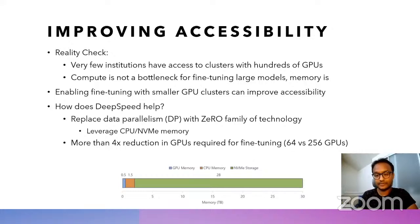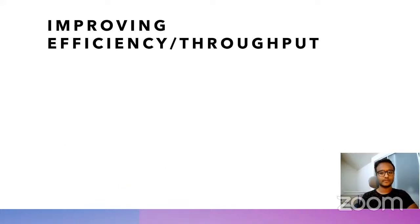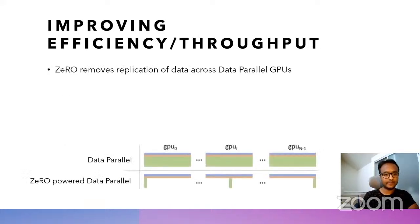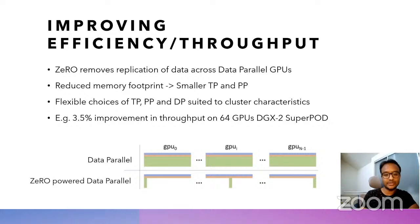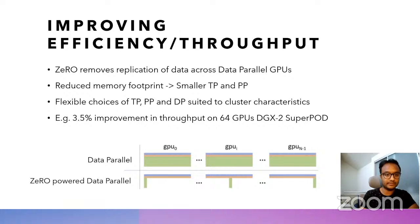For example, to train a 200 billion-parameter model, you would just need 64 GPUs to fine-tune it rather than 256 GPUs. In addition to leveraging CPU and NVMe memory, one of the main features of Zero is that it removes replication of data across data parallel GPUs by partitioning them instead. This partitioning reduces the memory footprint per GPU, which means you can fit the same model using smaller tensor parallelism or pipeline parallelism degree. Using 3D parallelism with Zero-powered data parallelism instead of standard data parallelism, we were able to see about a 3.5% improvement on throughput on a 64-GPU DGX2 super pod cluster for a 52 billion-parameter model.